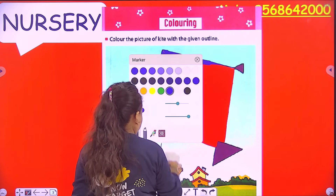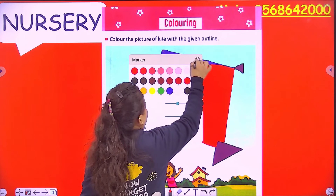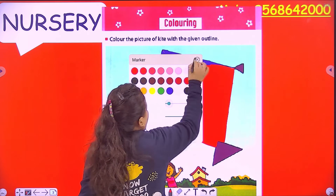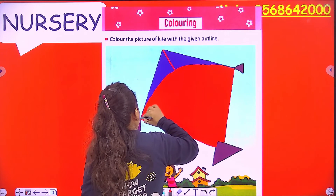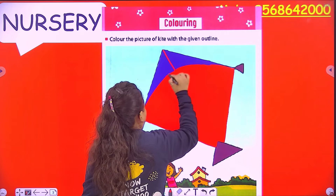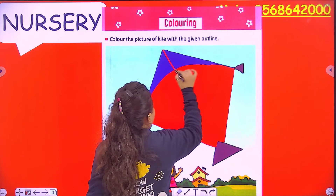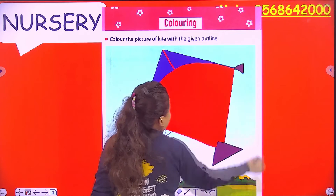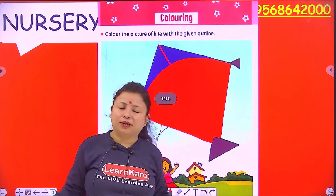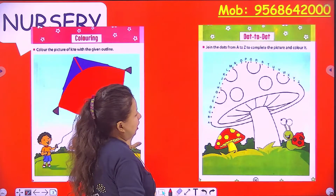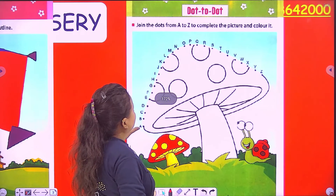And now we add the tail like this. Okay — now it's ready to fly! Our kite is ready to fly. In the next page, we have mushrooms, and we will learn letters by joining the dots.